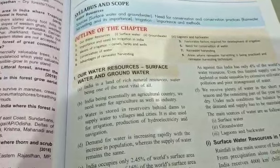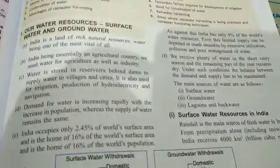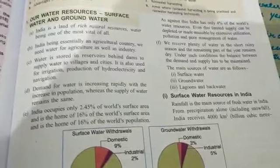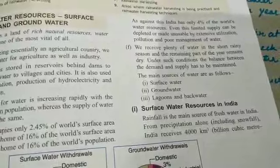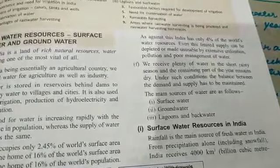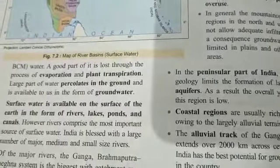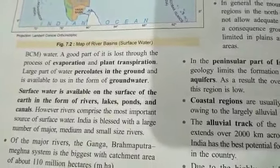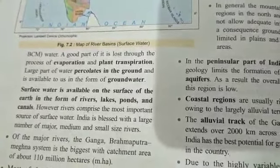The water resources of our country are divided into surface water and groundwater. Surface water resources in India include rainfall, which is the main source of fresh water. From precipitation we get surface rainfall, which also includes snowfall. A good part of surface water is lost due to evaporation and plant transpiration. Surface water is available on the surface in the form of lakes, rivers, ponds and canals.